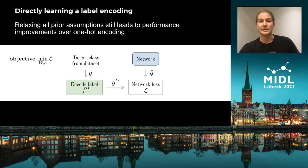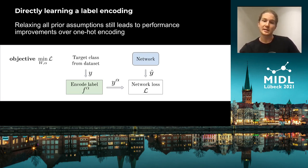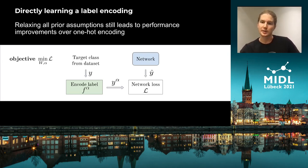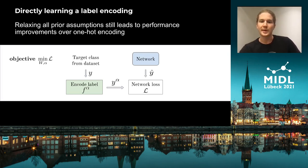We can finally take this even further, where we may not even know the nature of the relationship between the categories. In these cases, we can relax our constraints even further and directly learn a mapping from each ground truth class to a soft distribution that we jointly optimize as part of the training process. Here, we're actually able to expose relations that could not be represented in the previous approaches, and we're able to improve over the one-hot encoding baseline with pretty much no assumptions at all.